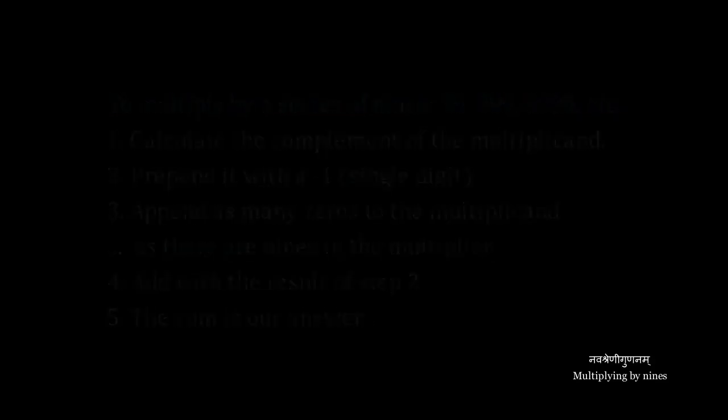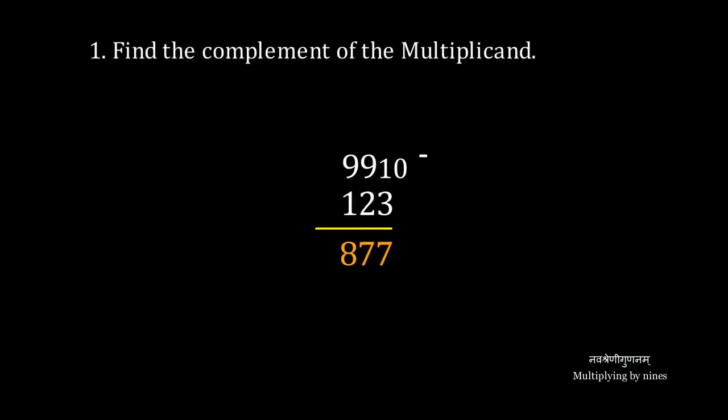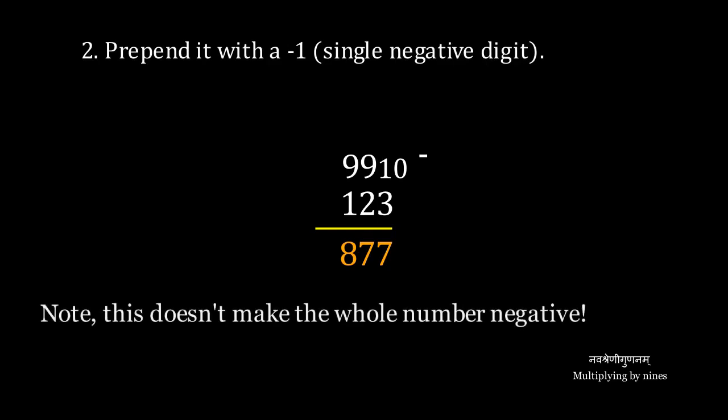For example, 123 times 99, first we find the complement of 123, which we know is 877. We prepend it with a single negative digit, a negative one.